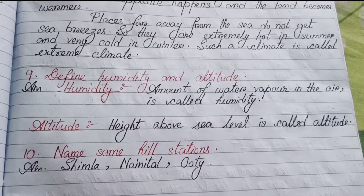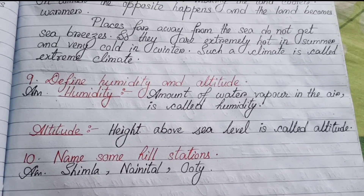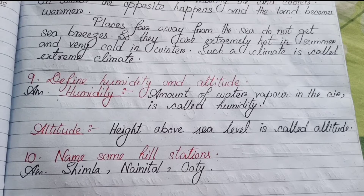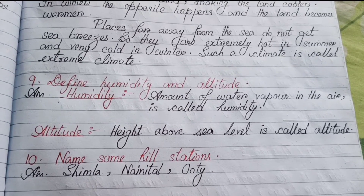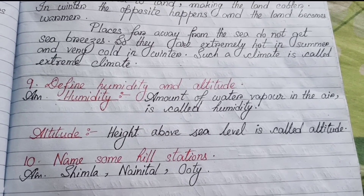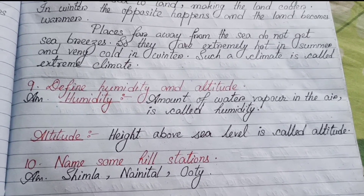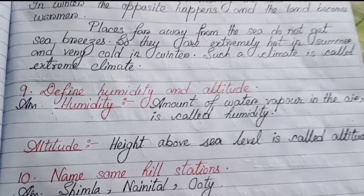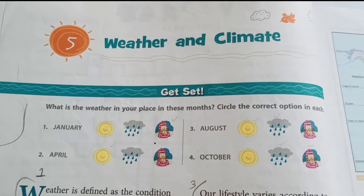Number nine: Define humidity and altitude. Humidity: the amount of water vapor in the air is called humidity. Altitude: height above sea level is called altitude. Number ten: Name some hill stations — Shimla, Nainital, Ooty.